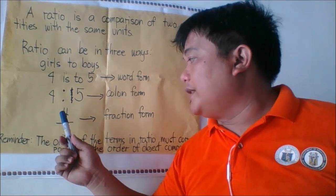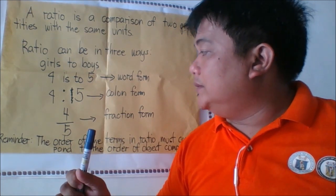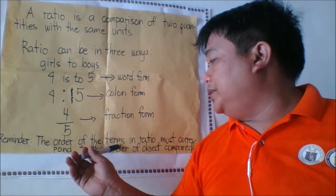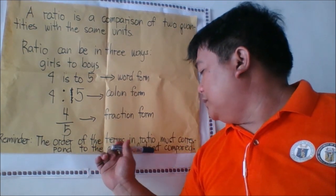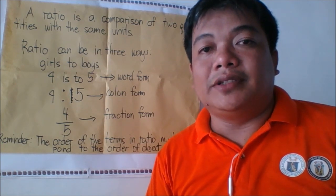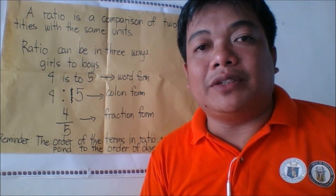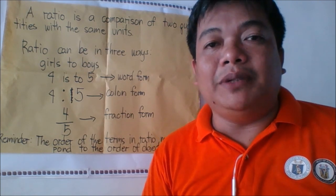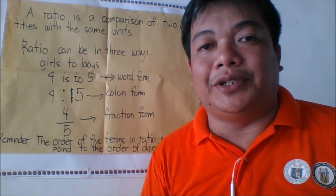We can also write the ratio using the numerator and denominator, which we call the fraction form — so four over five. As a reminder, the order of the terms in the ratio must correspond to the order of the objects being compared. The first quantity being compared is the first term, and the second quantity being compared is the second term.